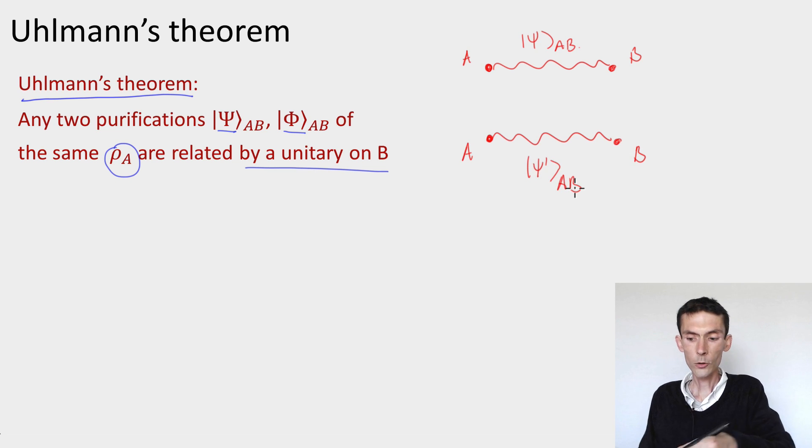When is it the case that you can apply a unitary on the B system only, act by the identity on A in a way that maps the state to the other? Well, a necessary condition is that the reduced density on A are the same for both states.